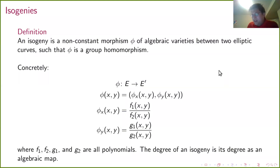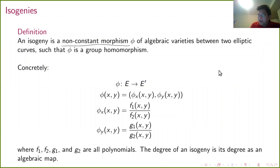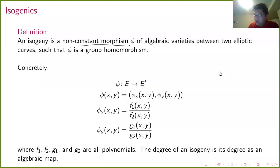There is some non-standardization as to whether a constant morphism counts as an isogeny. I'll use the convention that an isogeny has to be a non-constant morphism. The only constant morphism that is a group homomorphism is the map sending everything to the identity, so that's the only thing you're excluding — it's just a matter of notation whether you want to call that an isogeny or not.